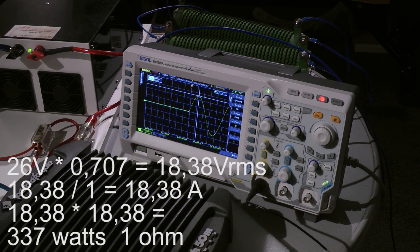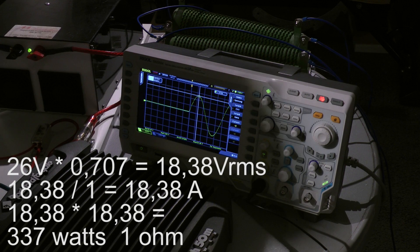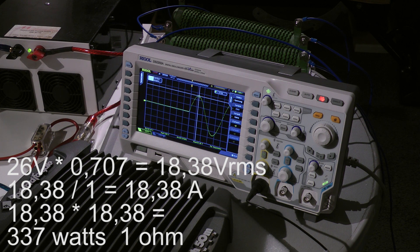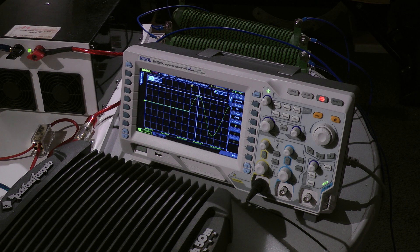I zoom back. And with this we have mono 1 ohm 26 volts. Multiplied by 0.707 is 18.38 volts RMS voltage, and this equals around 337 watts mono 1 ohm.